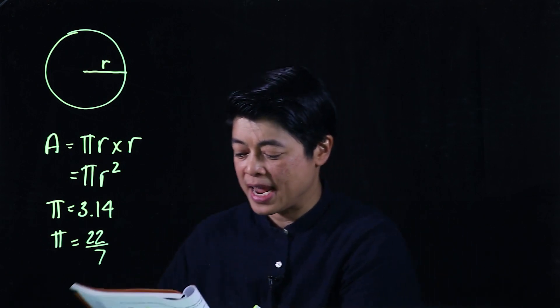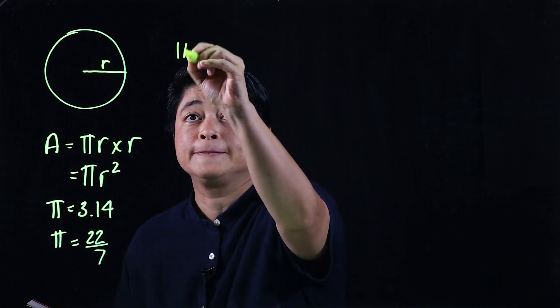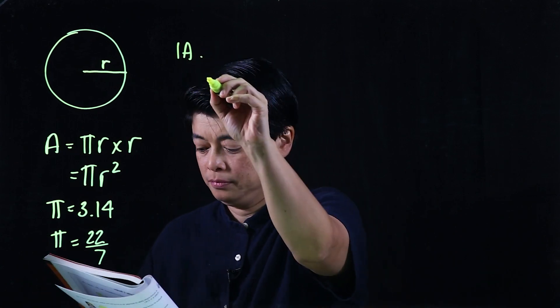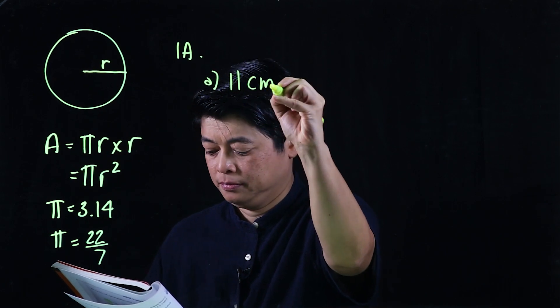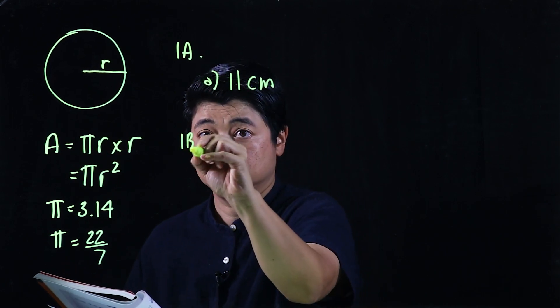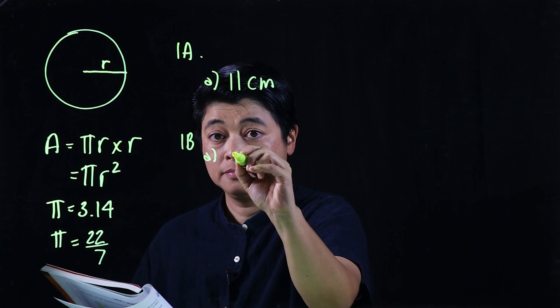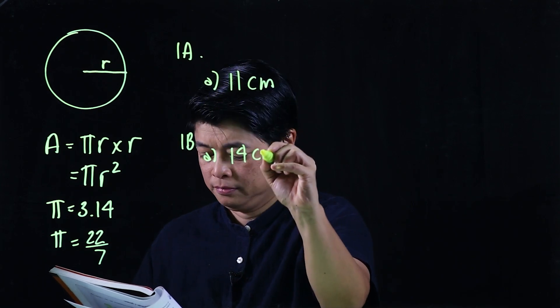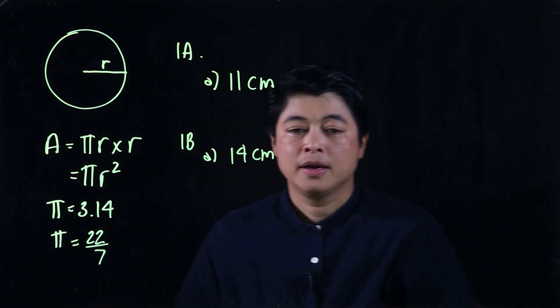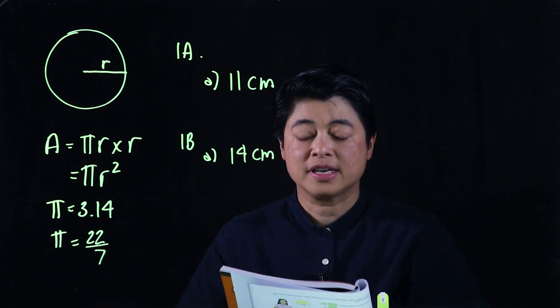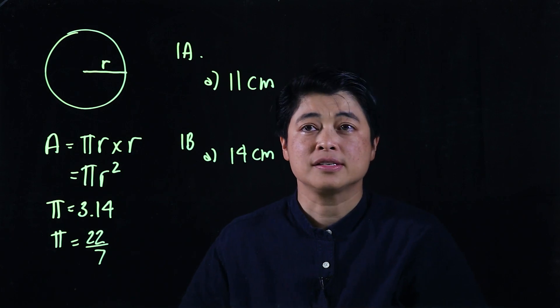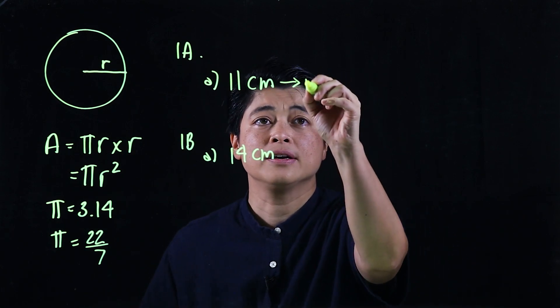Starting with 1a and 1b. So in this problem it says find the area of the circle with a given radius, so this is your radius.